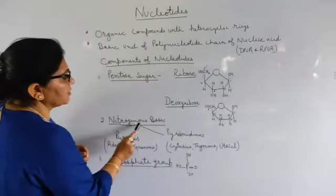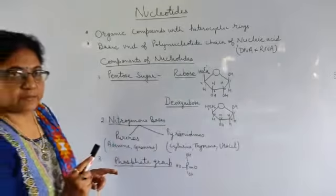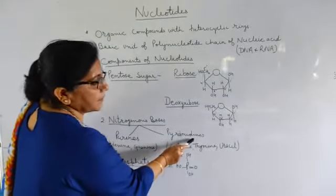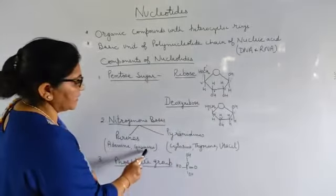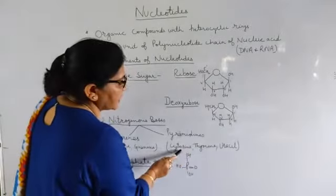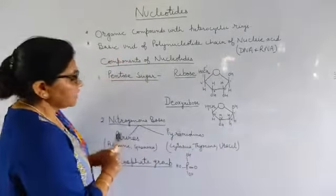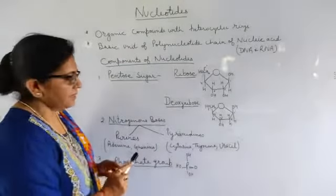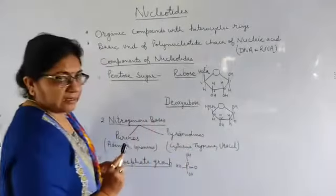Next are the nitrogenous bases. We have two types of nitrogenous bases: purines and pyrimidines. In purines we have adenine and guanine, whereas in pyrimidines we have cytosine, thymine and uracil. The structure of purines — adenine and guanine — are double ring structures, whereas pyrimidines are single ring structures.